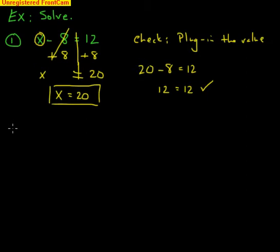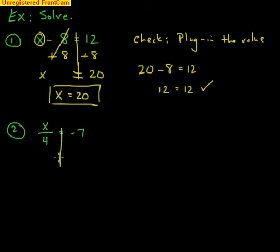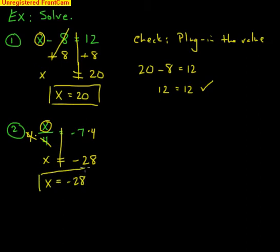Example two: x over 4 equals negative 7. What is happening to x? X is being divided by 4, so multiply both sides by 4. The times 4 and divide by 4 cancel, leaving x equals negative 7 times 4, which is negative 28.